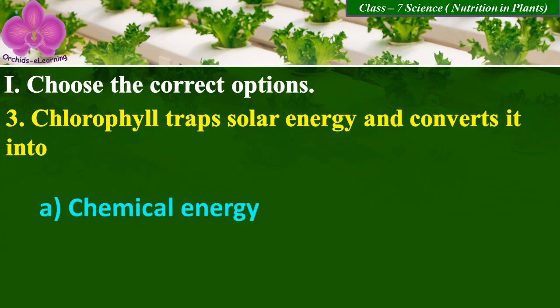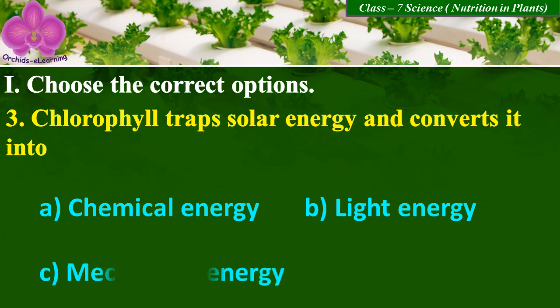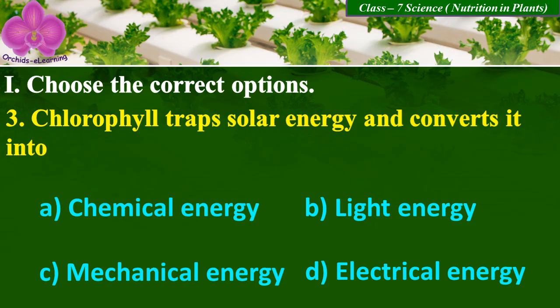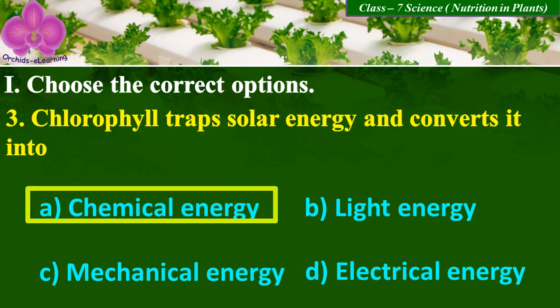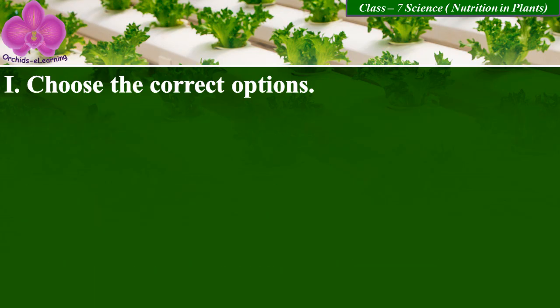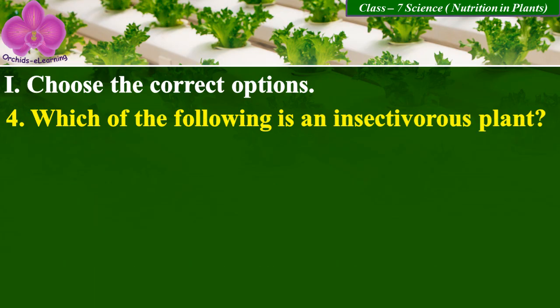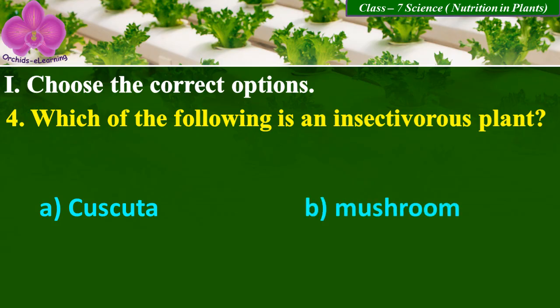chemical energy, B: light energy, C: mechanical energy, and D: electrical energy. The answer is A, chemical energy. Which of the following is an insectivorous plant? A: Cascuta, B: mushroom, C: pitcher plant,